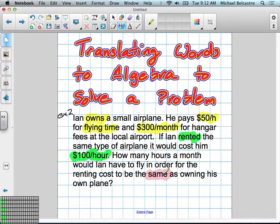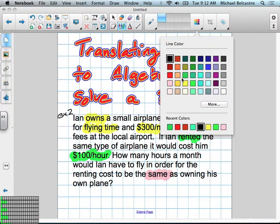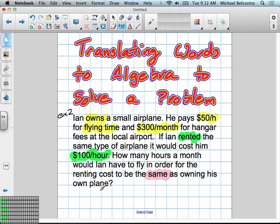So we're going to set up an expression for when Ian owns a plane. I don't think yellow turns up so well, so we'll do it in this color here. For owning a plane, let's figure out how much it costs. So we're going to say his cost. We'll put variable C as cost.